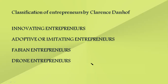To recap Danoff's classification: adoptive or imitative entrepreneurs observe and follow innovating entrepreneurs, copying their successful ideas without putting much effort into generating their own. Fabian entrepreneurs are driven by tradition and customs, hardly desiring to introduce new changes. Drawn entrepreneurs are shy and lazy — even incurring losses won't make them change their method of production or way of thinking, so they always lag behind.